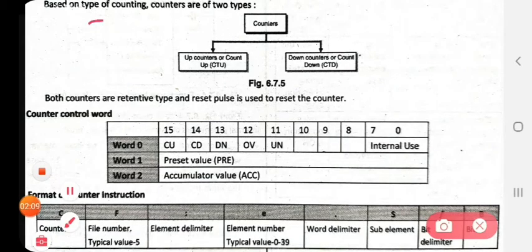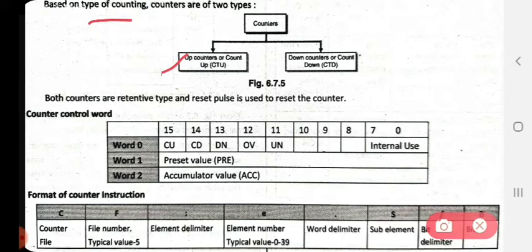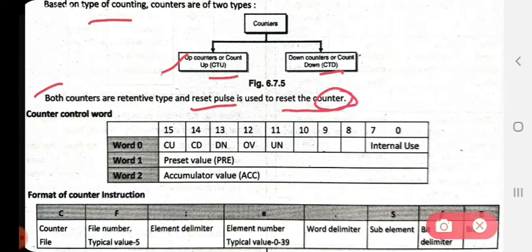Based on the type of counting, counters are of two types. First is the up counter, that is count up, indicated as CTU. Second is the down counter, that is count down, indicated as CTD. Both counters are retentive type, and a reset pulse is used to reset the counter.